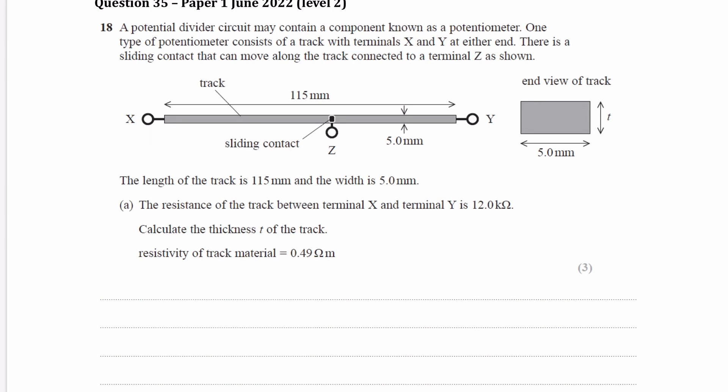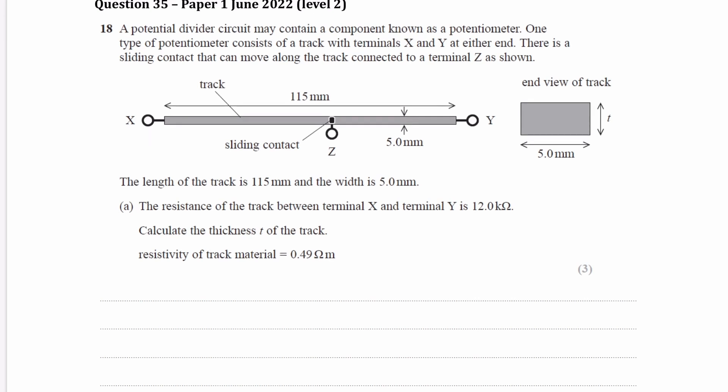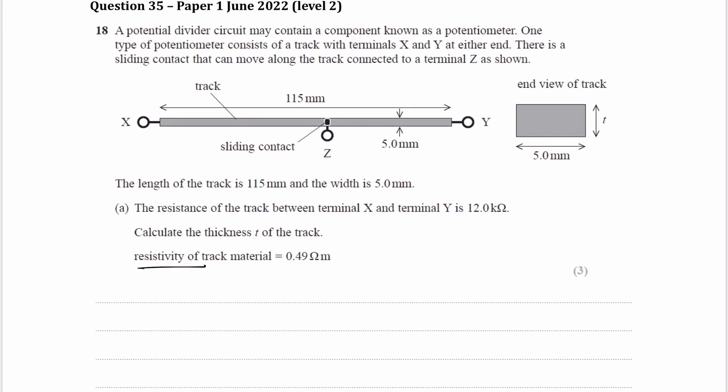We're trying to work out the thickness in this question. We're told things like resistivity, resistance, we're given a length, and an end view of the track. End view of the track basically means we're looking from this direction, so this would be a cross-section of the track. We're given effectively an area from these two as well, a cross-sectional area. That suggests we're going to be using the equation resistance equals resistivity times length over area.